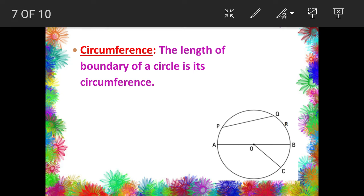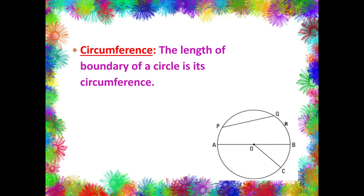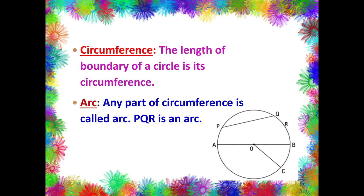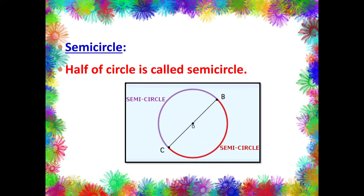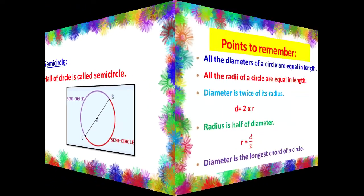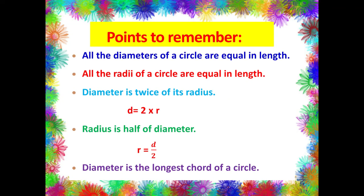The length of the full boundary of the circle is called the circumference, and any portion of this circumference is called an arc. Here PQR is an arc, and RBC is also an arc. Half of the circle is called a semicircle. To summarize: all the diameters of a circle are equal in length; all the radii of a circle are equal in length; the diameter is twice the radius; the radius is half of the diameter; and the diameter is the longest chord of a circle.